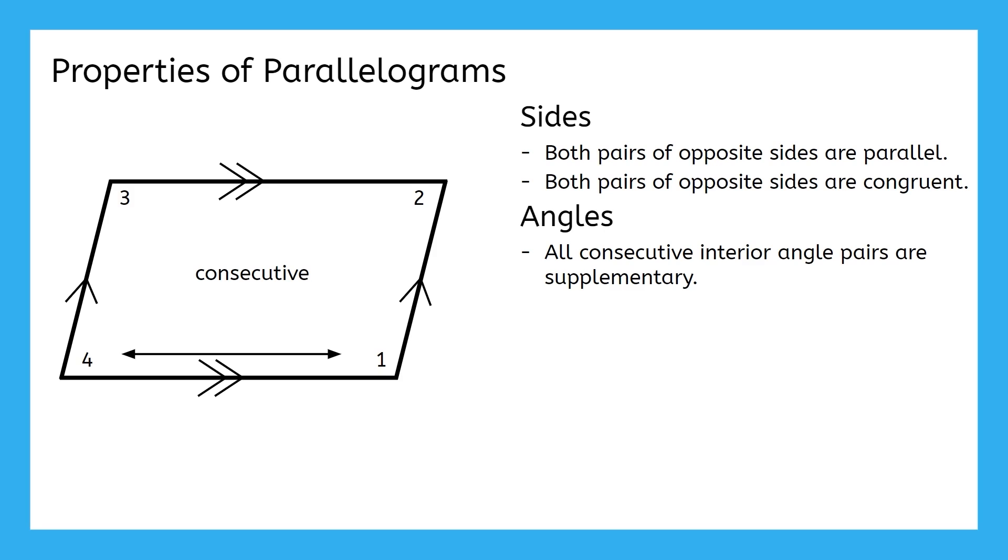I'll show you how we can prove their supplementary for one more pair here. And if you'd like, you can explore the other two on your own. Let's look at angles 2 and 3. That means I'm going to use my left and right sides as my parallel lines, and the top side as my transversal. And there we have it! Angles 2 and 3 are consecutive interior angles, so they are supplementary.